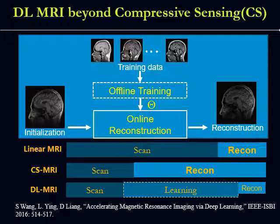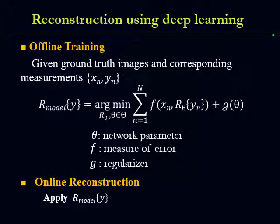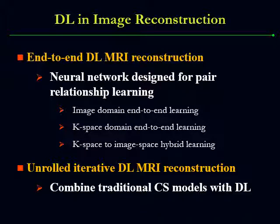The most time-consuming part can be done offline. This is the mathematical description for the offline training and for the online reconstruction. In addition to our work from 2016, there have been more and more papers on deep learning based MR reconstruction. These measures can be roughly grouped into two types: end-to-end deep learning MR reconstruction and unrolled iterative deep learning MR reconstruction.